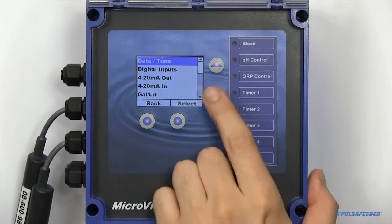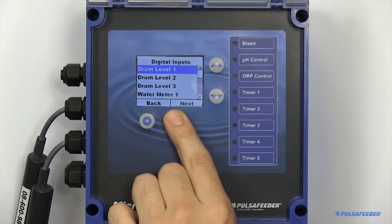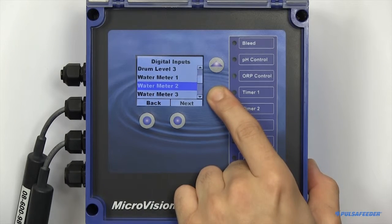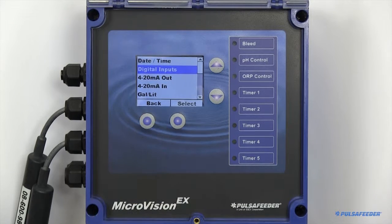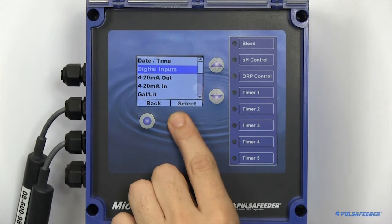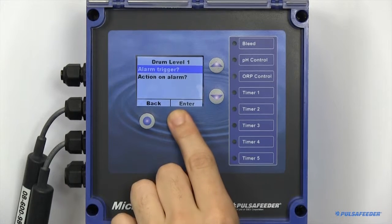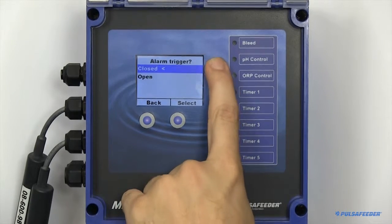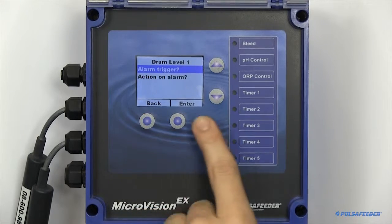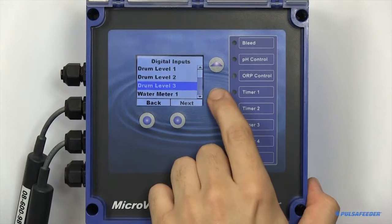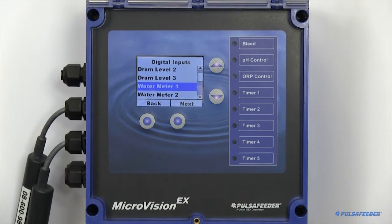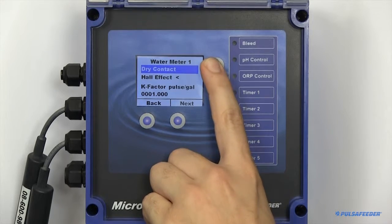The digital input screen is where you can set your drum level sensors and set up your water meters. Drum level sensors can either be configured to open or closed logic and alarms can also be configured dynamically. Water meters can either be set up as a dry contact type or a Hall effect water meter. Each have their own independent multiplier.